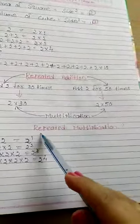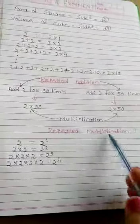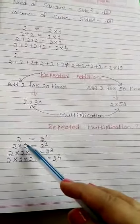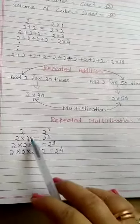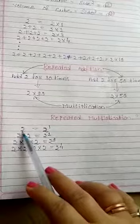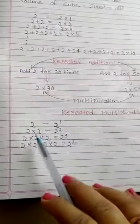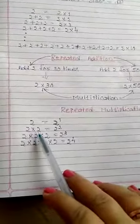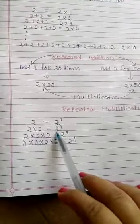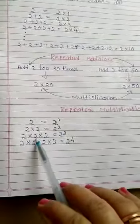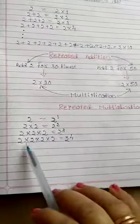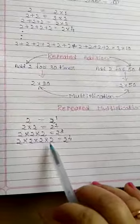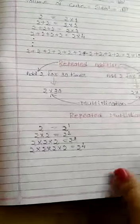Same as it is, now we have repeated multiplication. What is repeated multiplication? The same number is multiplied again and again. So: 2 equals 2 to the power 1; 2 multiplied by 2 means 2 is multiplied 2 times, so we write 2 to the power 2; 2 multiplied by 2 multiplied by 2 — 2 is multiplied 3 times — so 2 to the power 3; 2 multiplied by 2 multiplied by 2 multiplied by 2 gives 2 to the power 4.